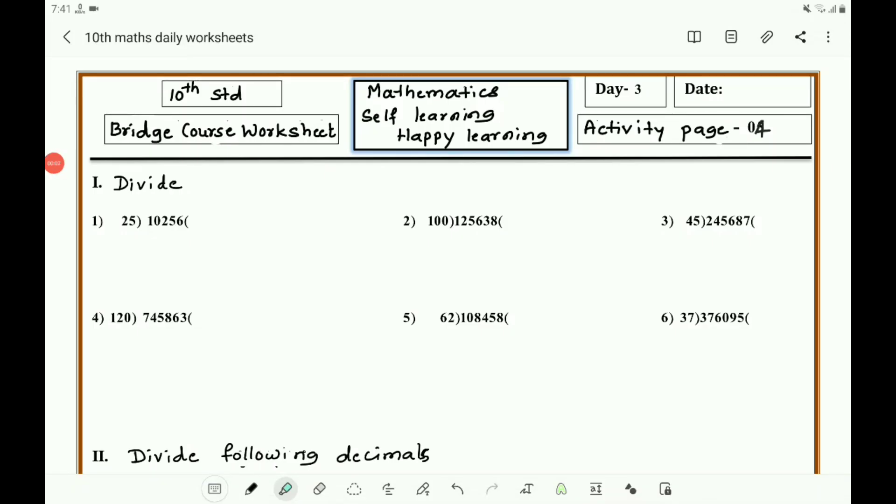Hello dear children, this is Activity Page 4 for Day 3, and the activity is division. Take the first one: 35,10,256 divided by 25, then 1,00,4,256,36 divided by 100, then 2,45,687 divided by 45.